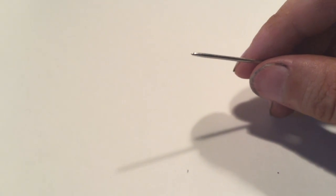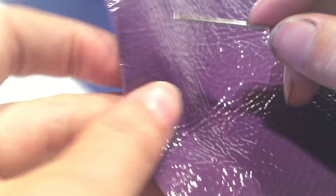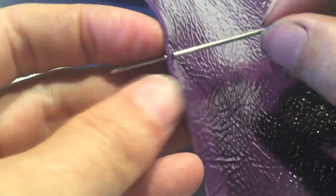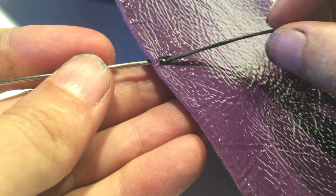Got a little piece of leather to show you what we're talking about. So we just want to find one of the holes that was already cut with the chisel, and it's just going to go straight through.